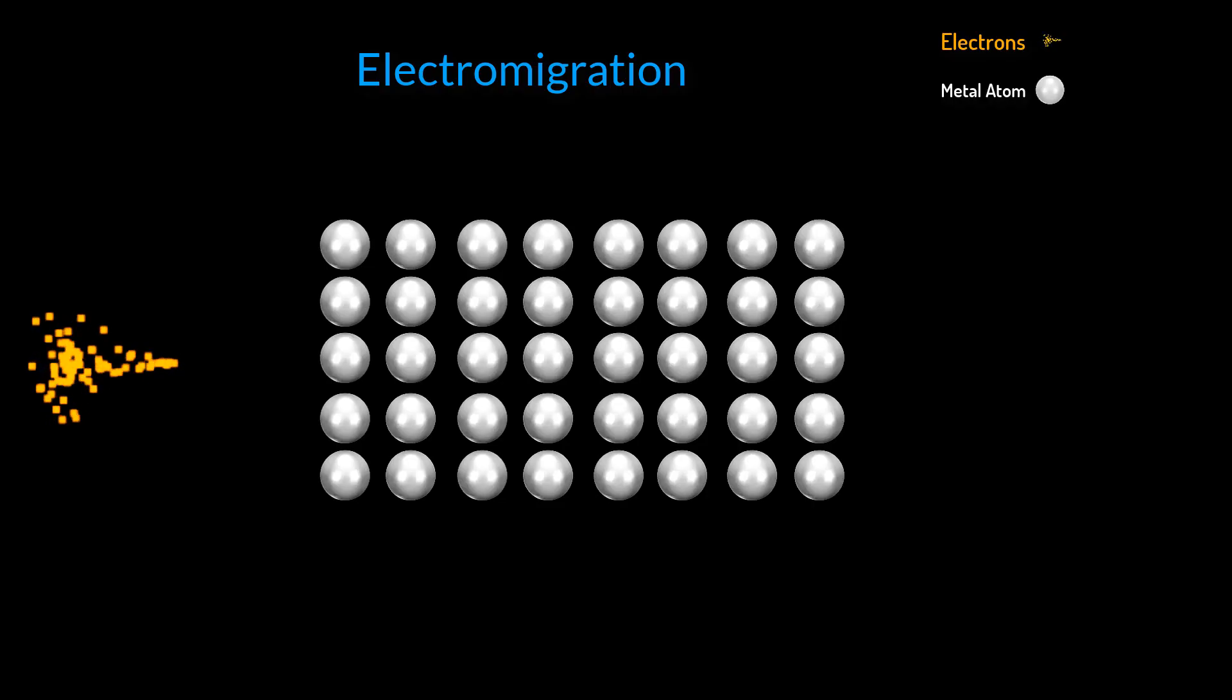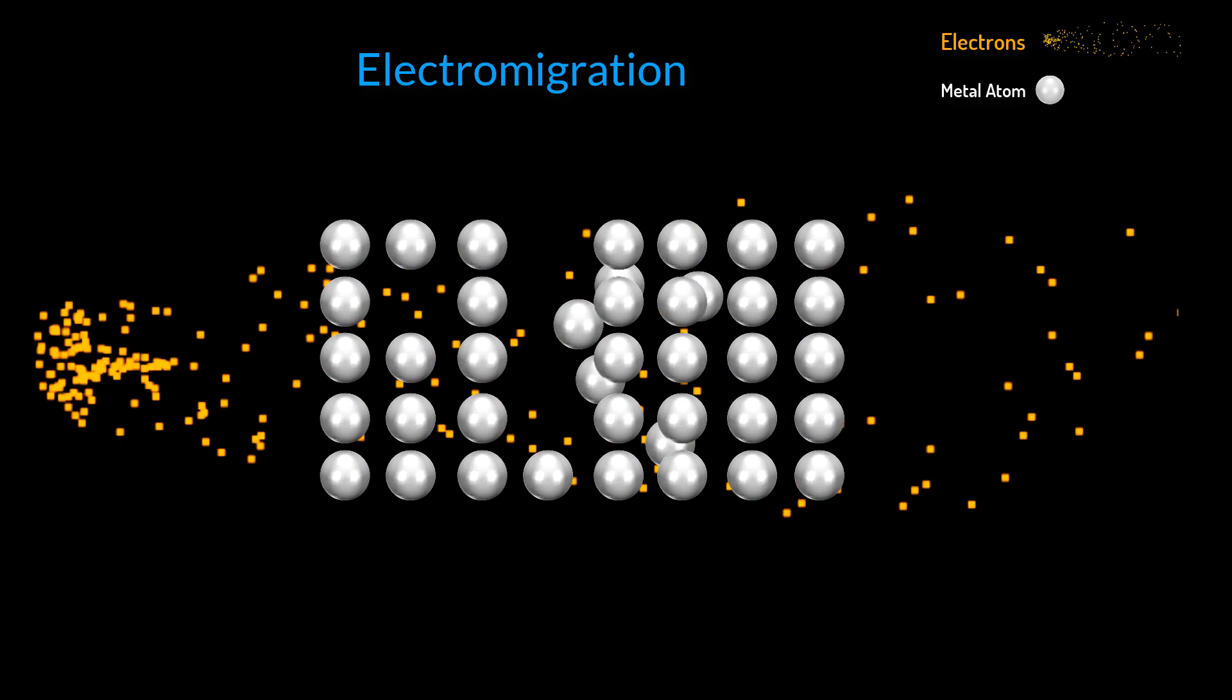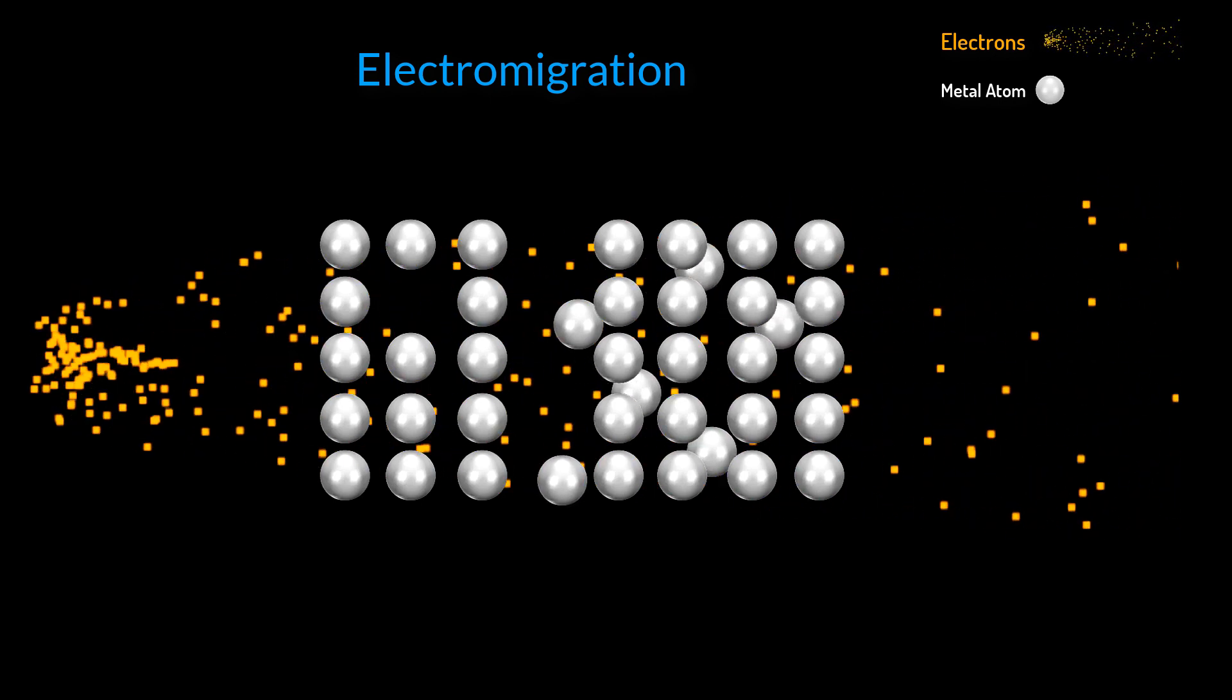High currents flowing through an interconnect produce an electron wind that can dislodge atoms and transport them away. This causes voids to form in the metal, increasing their resistance and leading to potential open circuits.